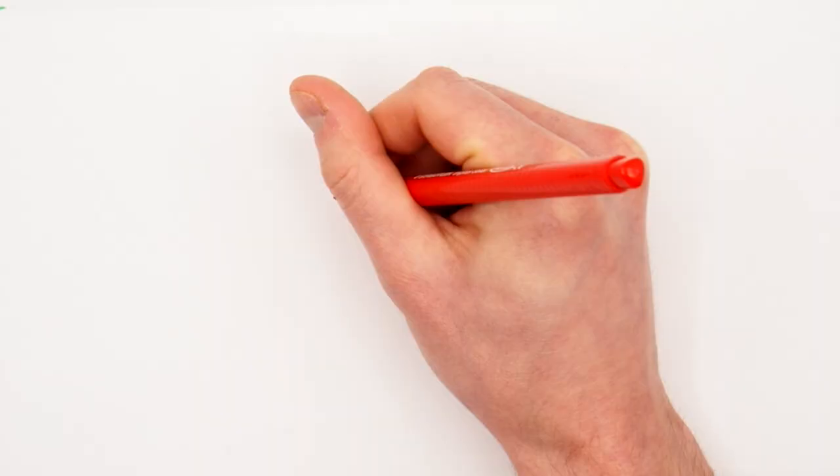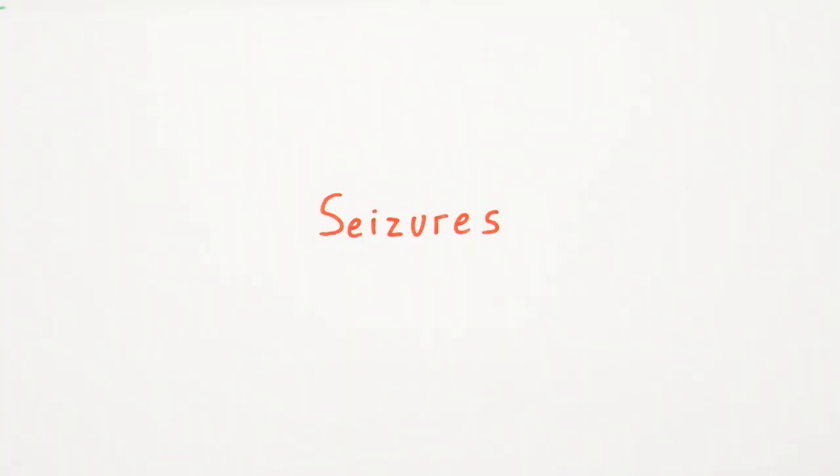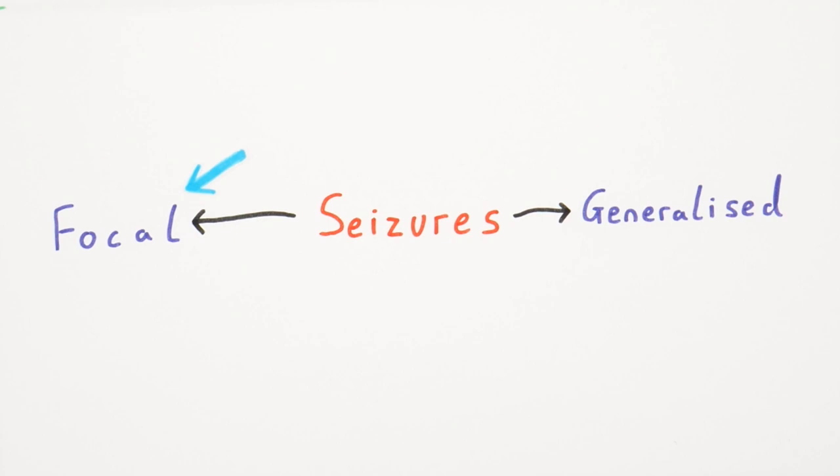I'm going to explain what's understood about the causes of epilepsy and the current research being done to try and find new treatments. The tonic clonic seizure that you just saw is only one type of seizure. There are lots of different types and they can have many different effects. Let me draw out this flow diagram. Seizures are initially split into two main categories: focal seizures and generalized seizures.